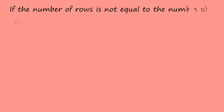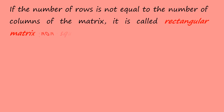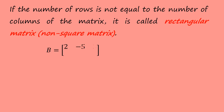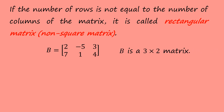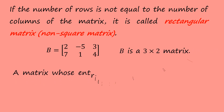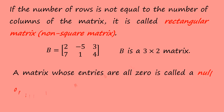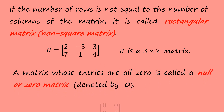If the number of rows is not equal to the number of columns of the matrix, it is called a rectangular matrix or non-square matrix. For example, we have this 3 by 2 matrix. A matrix whose entries are all 0 is called a null matrix or zero matrix, denoted by 0.